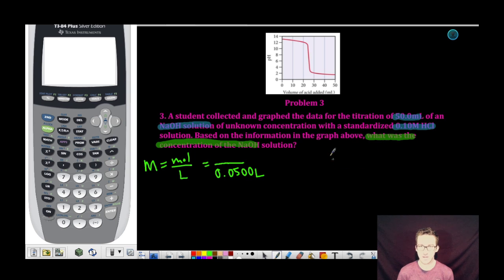As I think about the other information I'm given here, I'm once again going to use my molarity equation. Molarity equals moles per liter. This time, I know the concentration of my standardized acid solution, 0.10 molar, and I know what volume of HCl I needed to reach the equivalence point.